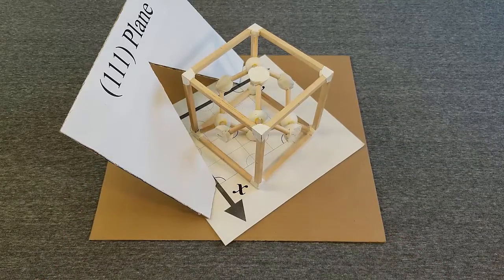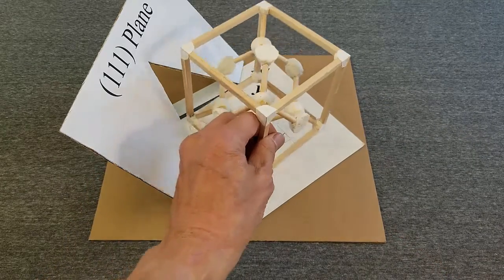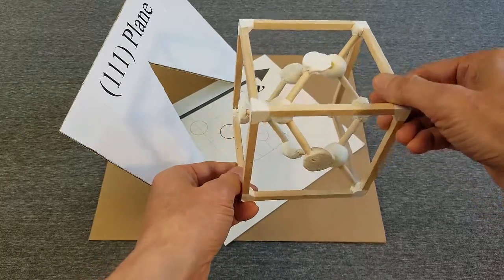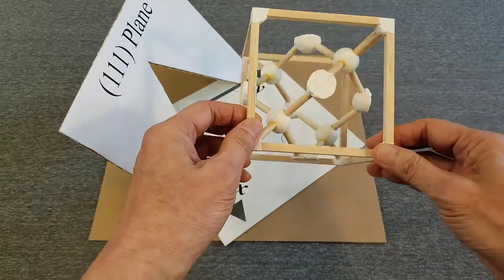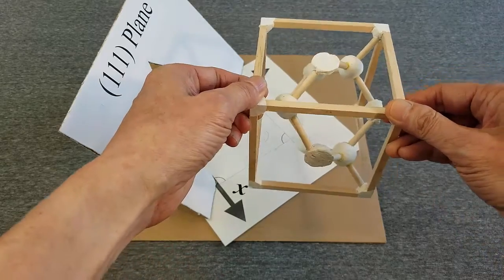Another orientation, 1-1-0, is less common. To view a unit cell in that direction, line up one edge behind the opposite edge, like this.